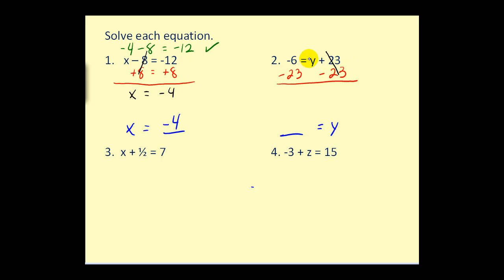So now we'll simplify. We're left with y on the right side, and the left side at negative 6 minus 23 would equal negative 29. Therefore our solution is y equals negative 29. And if we wanted to we could rewrite this so the variable is on the left side, but as you can see these two are equivalent.